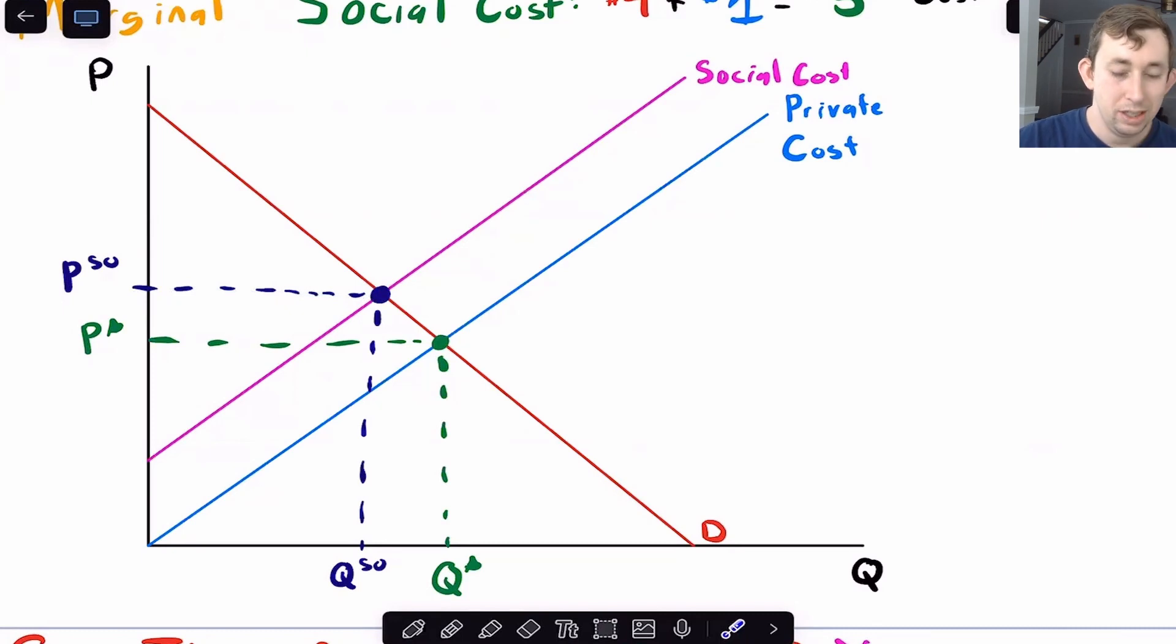One other thing to note, notice that this quantity SO, this socially optimal quantity is not zero. We still want electricity to power our homes, to power computers. We don't necessarily want that electricity or that polluting good to be zero. But we want it to be less than if just the firms decide how much to make by setting marginal revenue equal to marginal private cost.